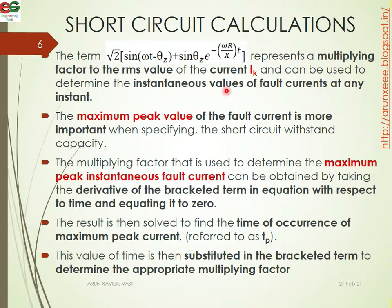The maximum peak value of the fault current is more important than specifying the short circuit withstand capacity. The multiplying factor used to determine the maximum peak instantaneous fault current can be obtained by taking the derivative of the bracket term in the equation with respect to time and equating it to zero.